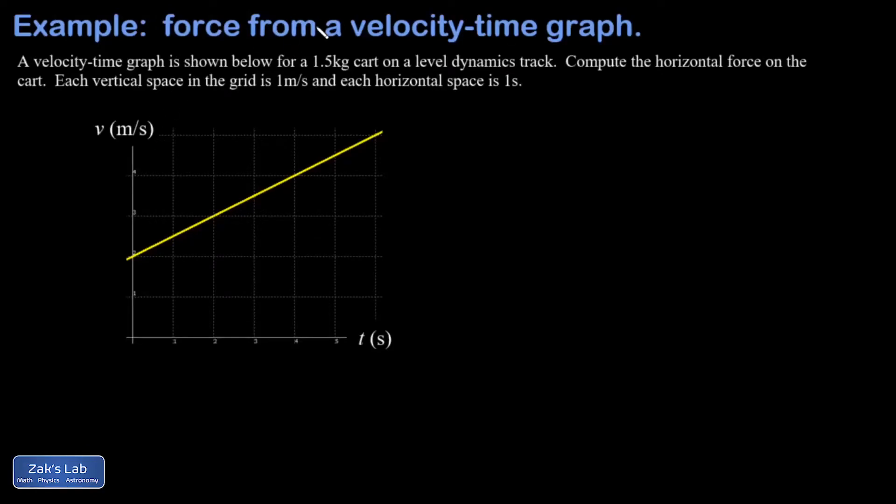In this problem we're shown a velocity-time graph, just a nice linear thing, and we're told that it describes the motion of a one and a half kilogram cart on a level dynamics track. Then I'm asked to compute the horizontal force on the cart. The last line of the setup here is just telling us we can trust the grid spacing on the graph.